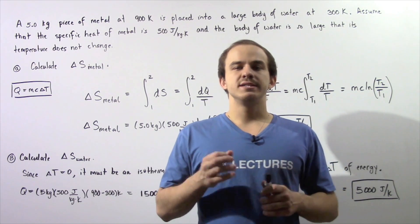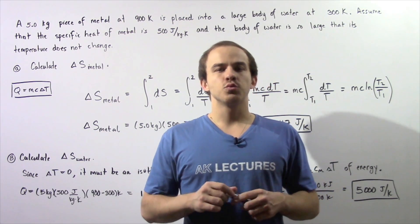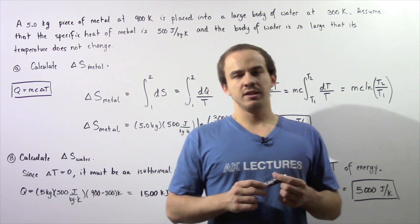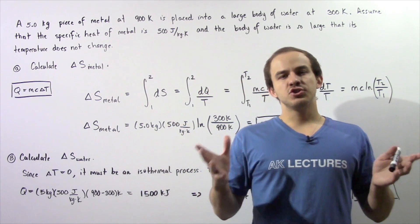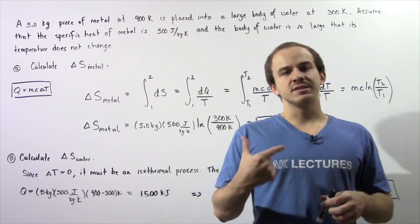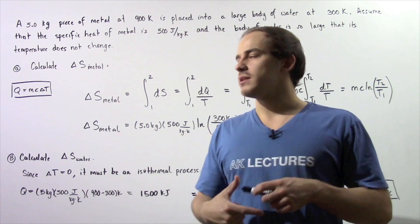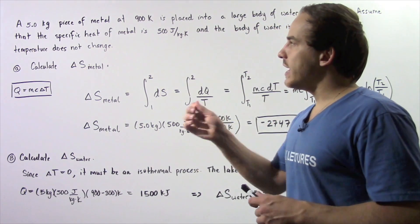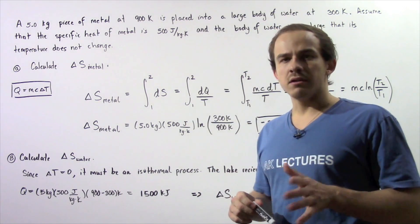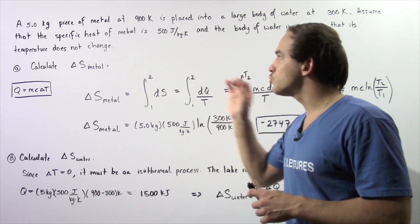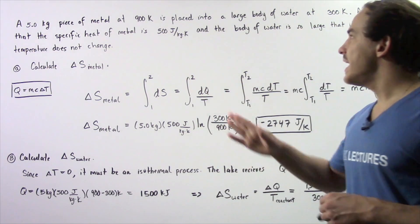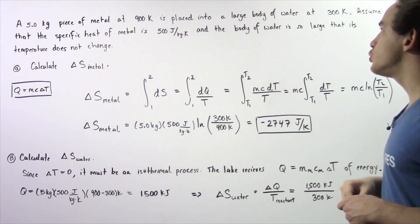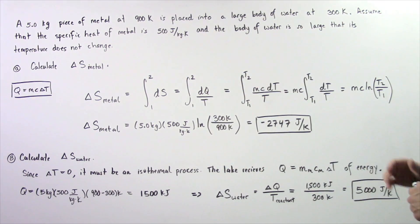Let's look at the following example in which we're going to calculate the change in entropy of the system as well as the surroundings. A 5 kilogram piece of metal at 900 K is placed into a large body of water at 300 K.